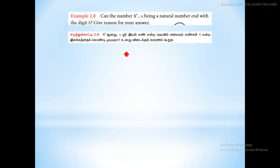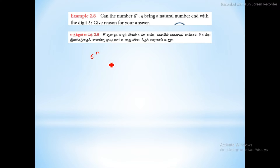Next sum: 6 power n. N is a natural number, meaning 1 to infinity — only positive integers. We need to prove that 6 power n does not end with the digit 5. We factorize 6 to 2 into 3, so 6 power n equals 2 into 3 whole power n, which equals 2 power n into 3 power n.